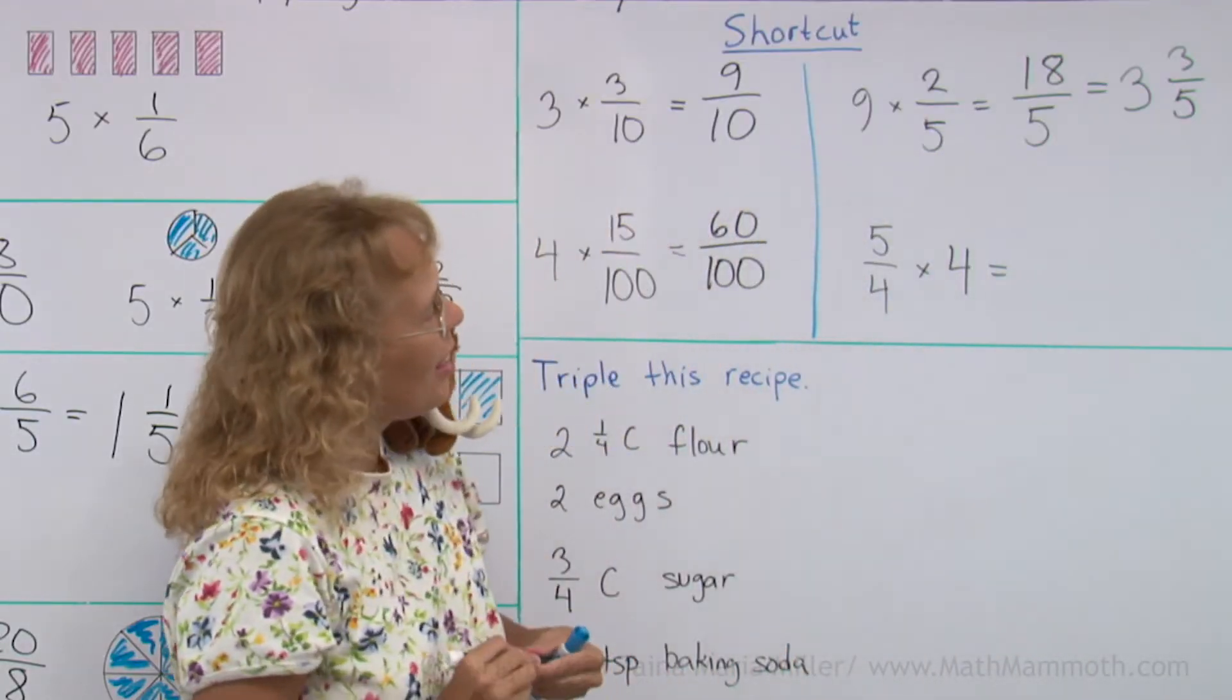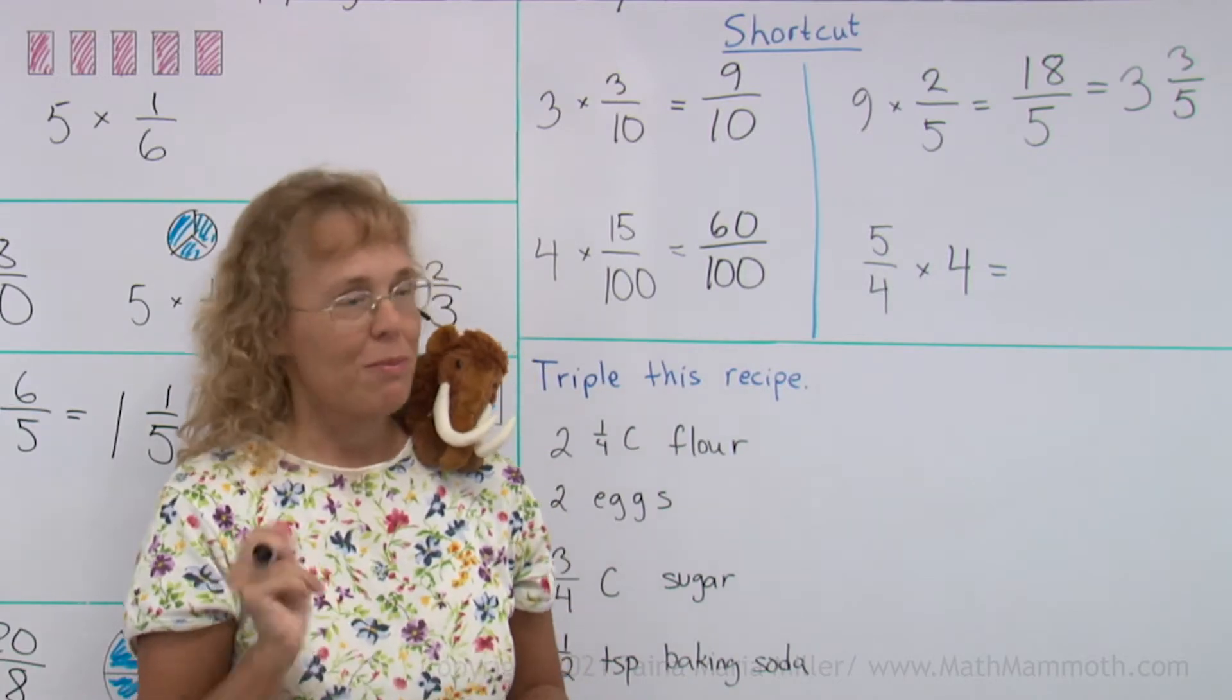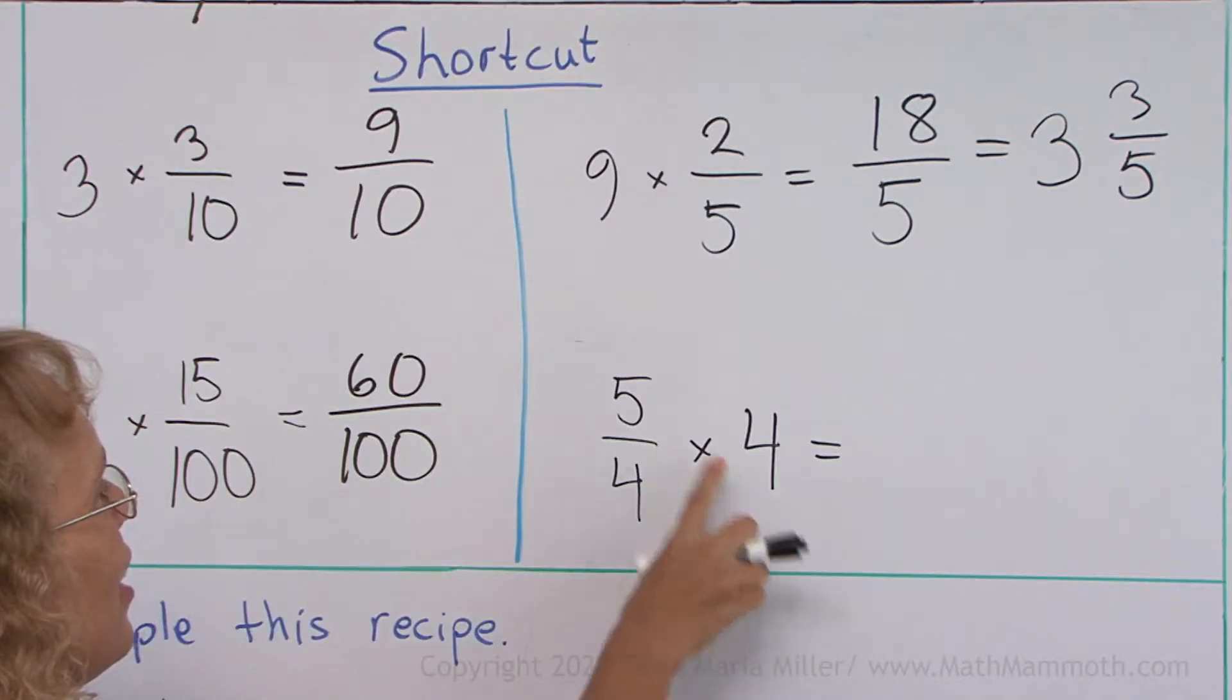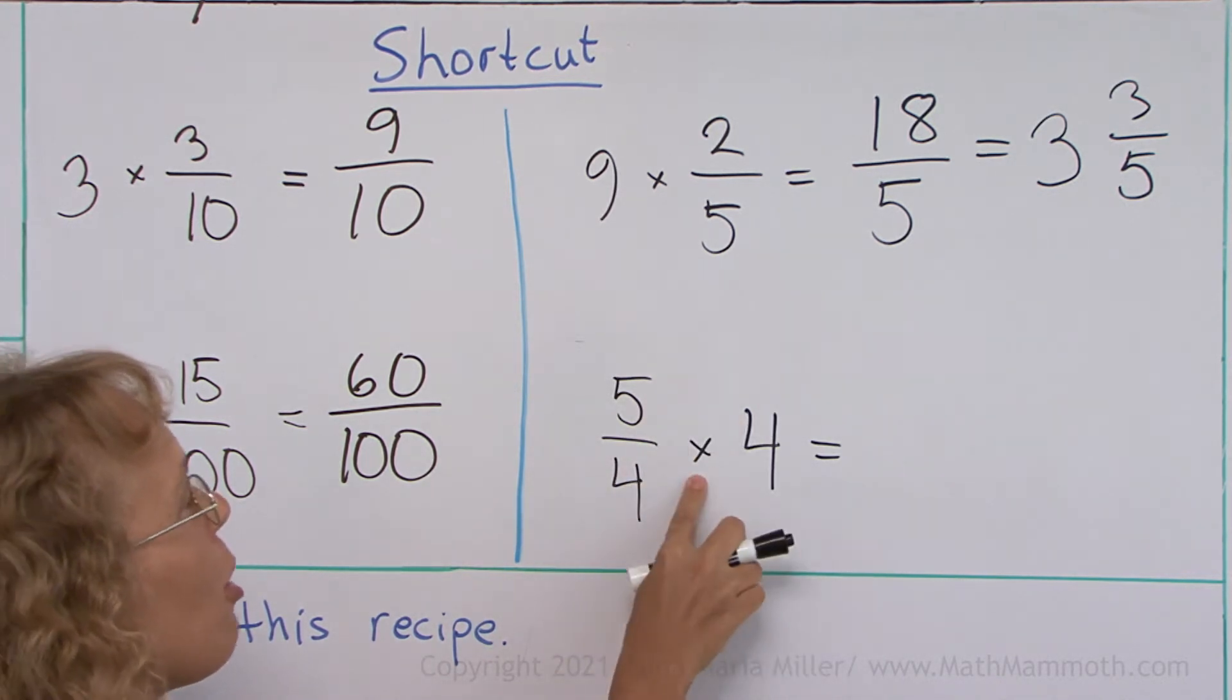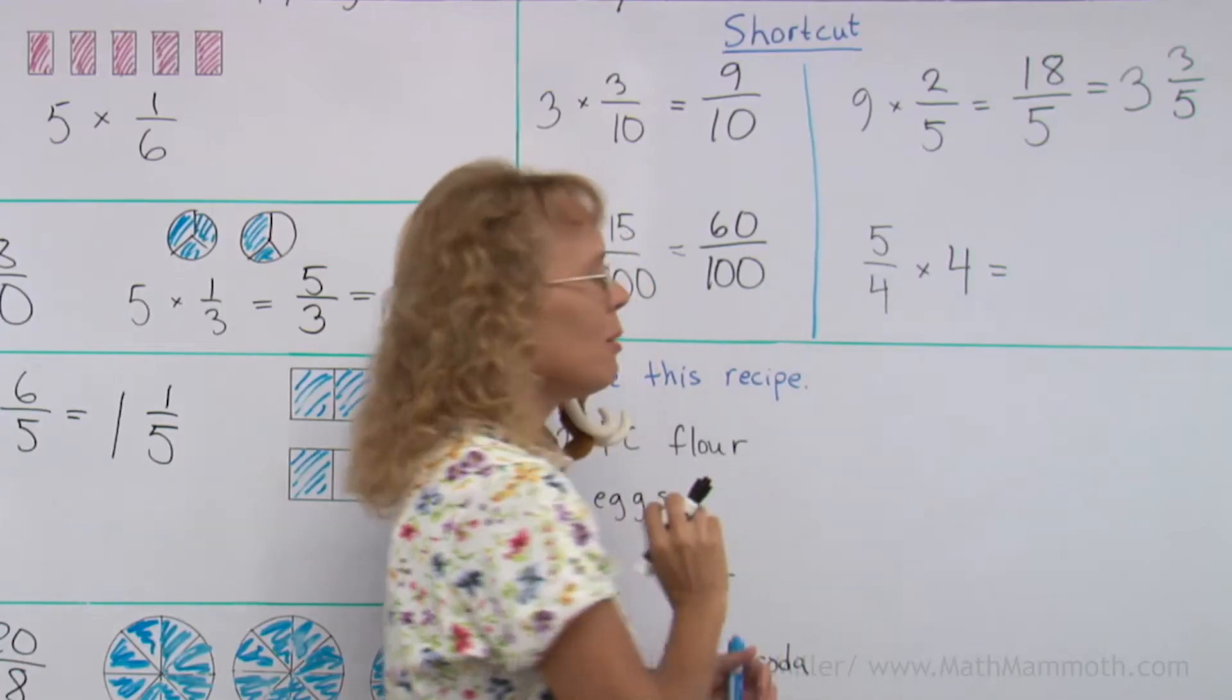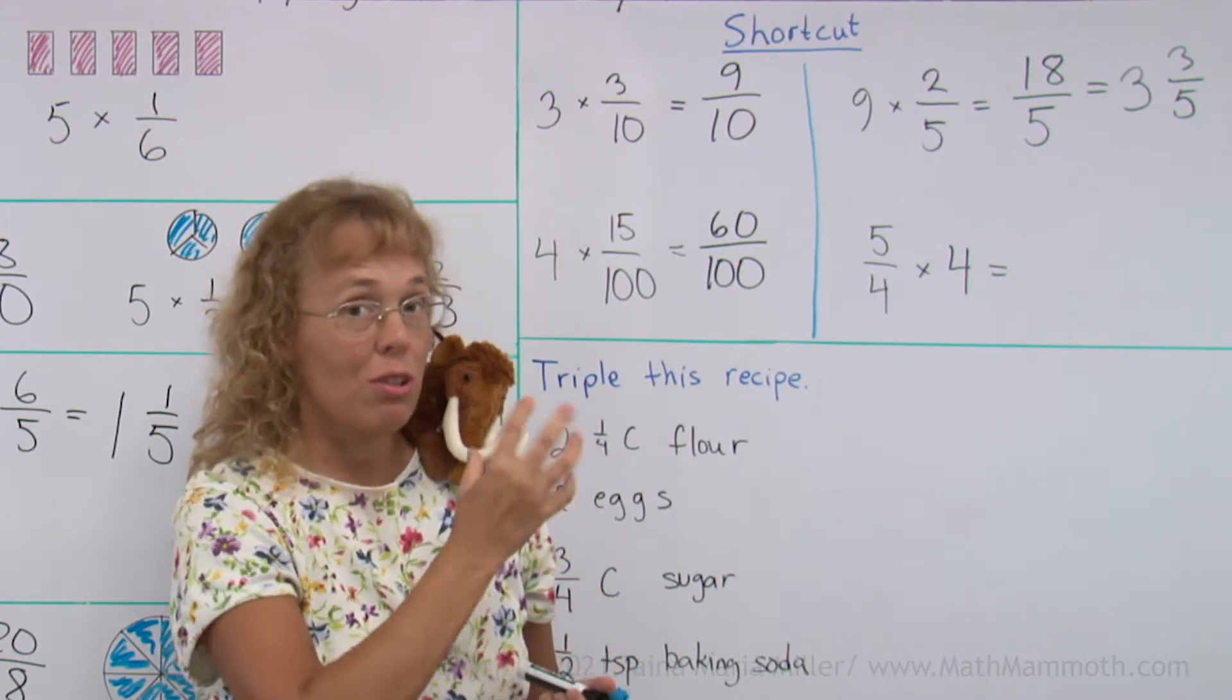One last one. 5 fourths times 4. Now we have the whole number here and the fraction here. But this is still the same as 4 times 5 fourths. Four copies of 5 fourths. Because in multiplication you can change the order of the factors.